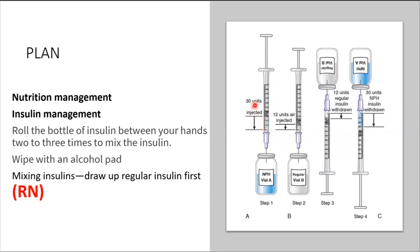So if you want to give 30 units of NPH, you want to inject 30 units of air. If you want to give 12 units of regular insulin, you want to inject 12 units of air. Remember, you want to inject air into the cloudy NPH vial first before you inject air into the clear regular vial.